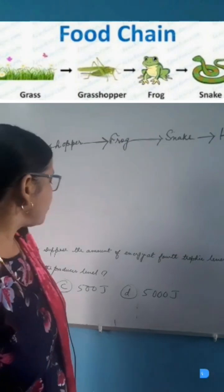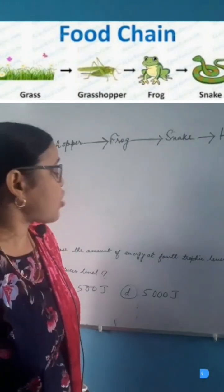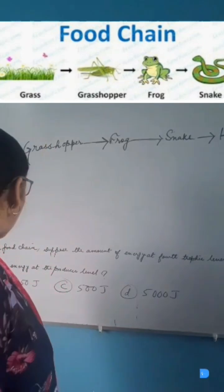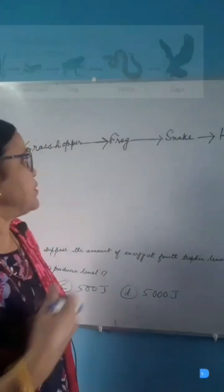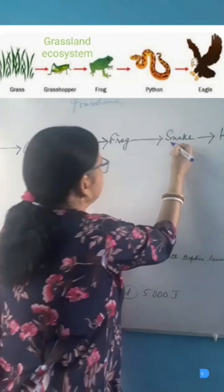In the given food chain, suppose the amount of energy at the 4th trophic level is 5 Joules. What will be the energy at the producer level? Here at the 4th trophic level is snake.